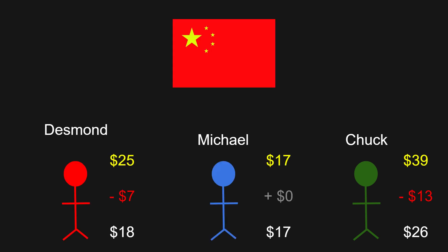To summarize our solution: the best outcome is for the friends to get Chinese food tonight. According to the VCG mechanism, Desmond makes a payment of $7 and Chuck makes a payment of $13. Desmond values Chinese food at $25, so after his payment he's left with a net payoff of $18. Michael values Chinese food at $17 and makes no payment, so his payoff is also $17. Chuck values Chinese food at $39 and makes a payment of $13, giving him a net payoff of $26.